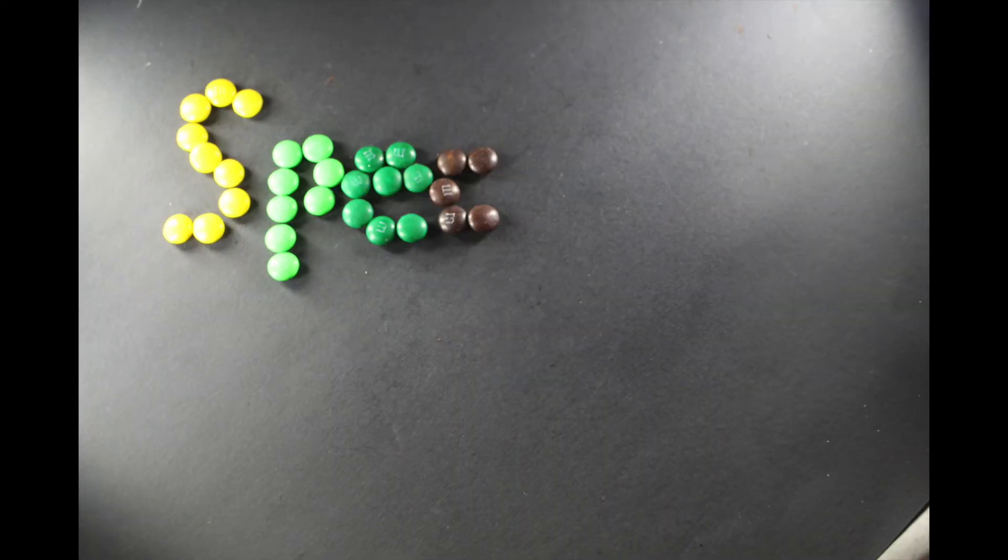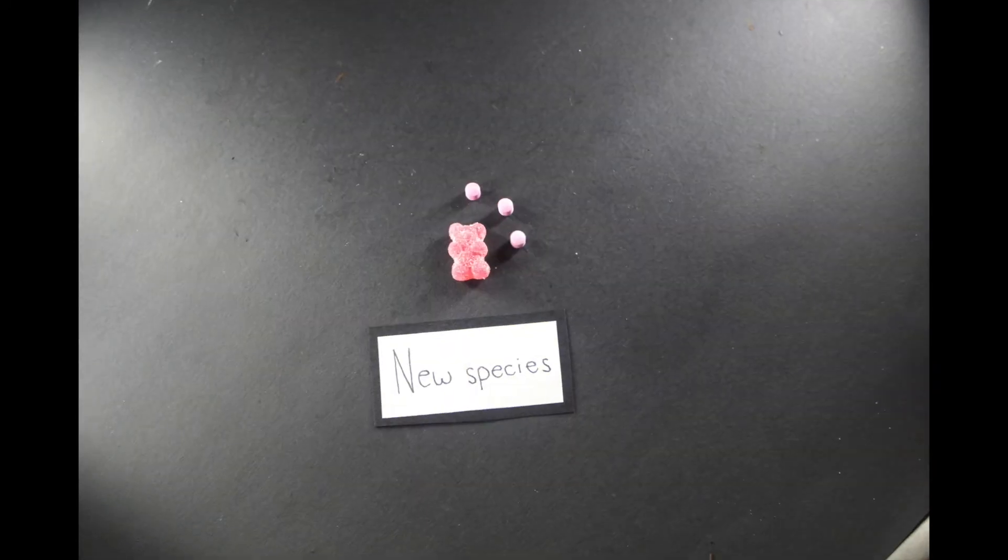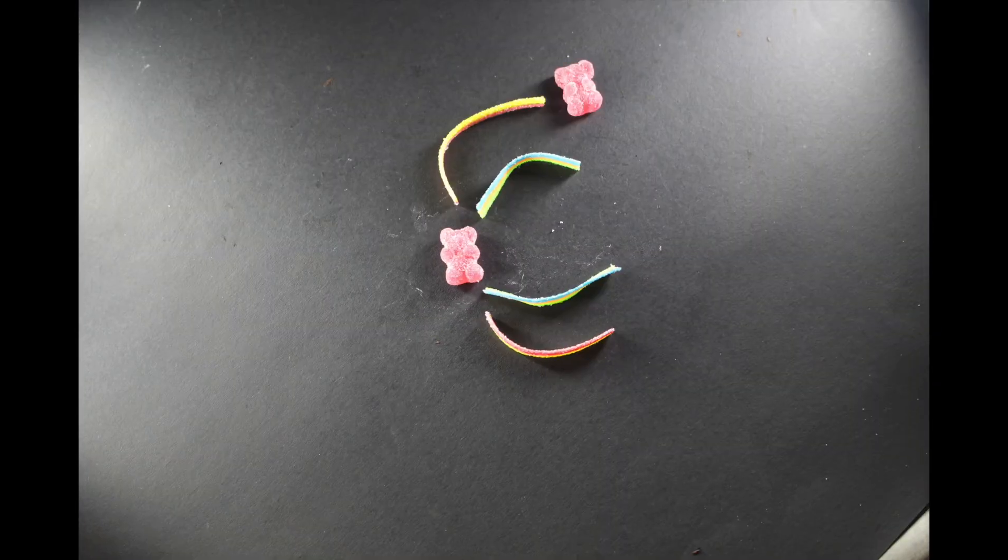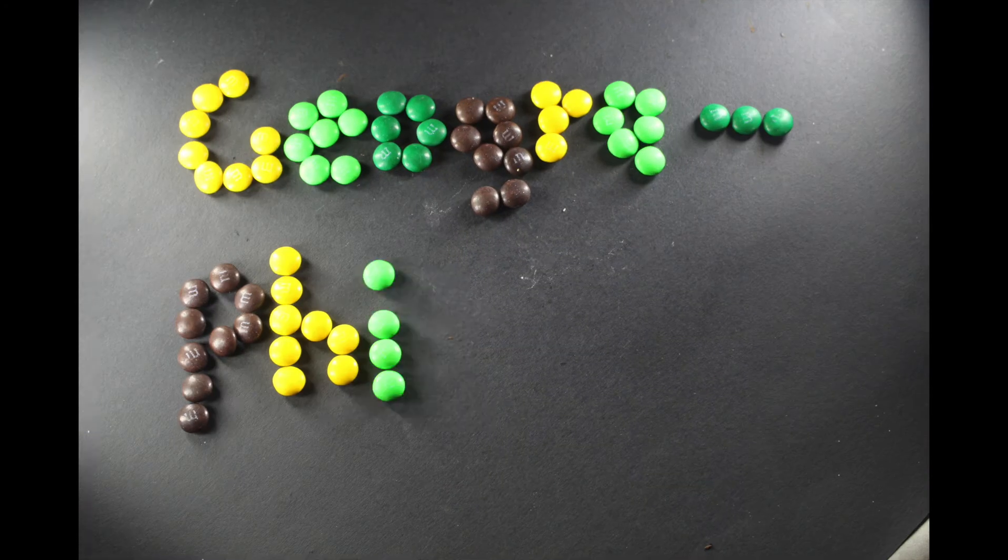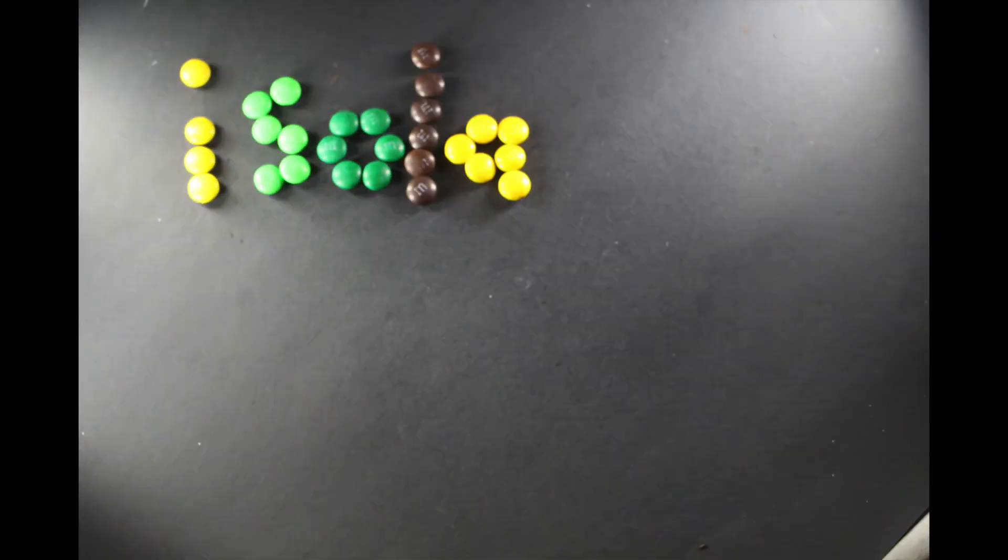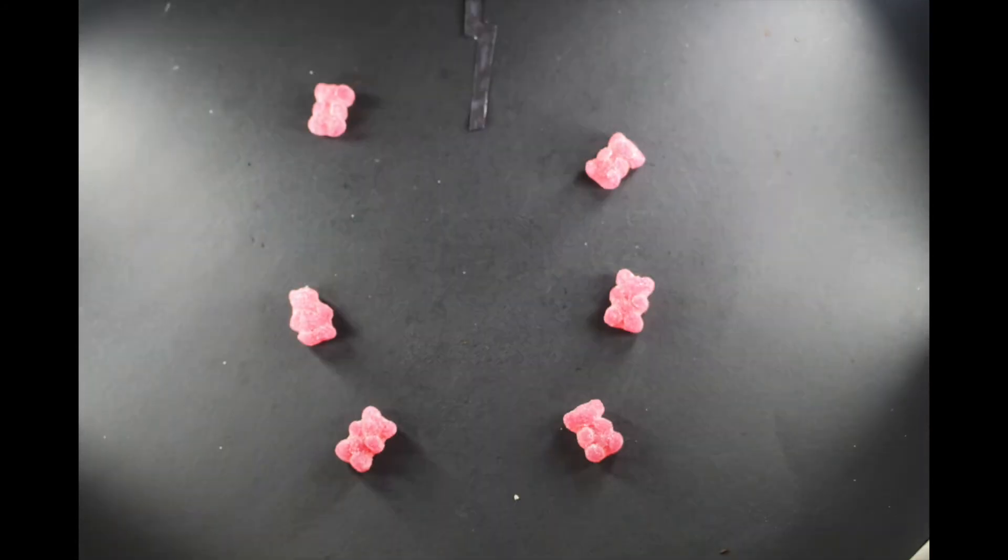When a new species is formed it is called speciation. This is a process over hundreds of generations and happens in steps. Step one is geographical isolation where the species splits into two groups. Each group have different environments to face.